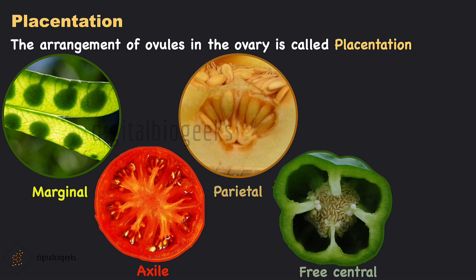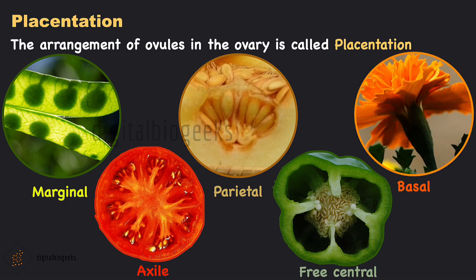In free central placentation, ovules are freely arranged on the central axis without the presence of septa — for example, dianthus and bell pepper. The last type is basal placentation: the placenta develops at the base of the ovary and a single ovule is attached to it — for example, sunflower and marigold. So we have five types of placentation: marginal, axile, parietal, free central, and basal.